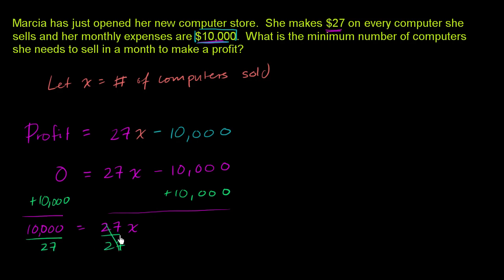On our right-hand side, we have x. So let me just write this down. So we have x on our right-hand side is going to be equal to 10,000 over 27. I've switched the right and the left-hand sides here. Now what is this going to be? Well, we can do a little bit of long division to handle that.